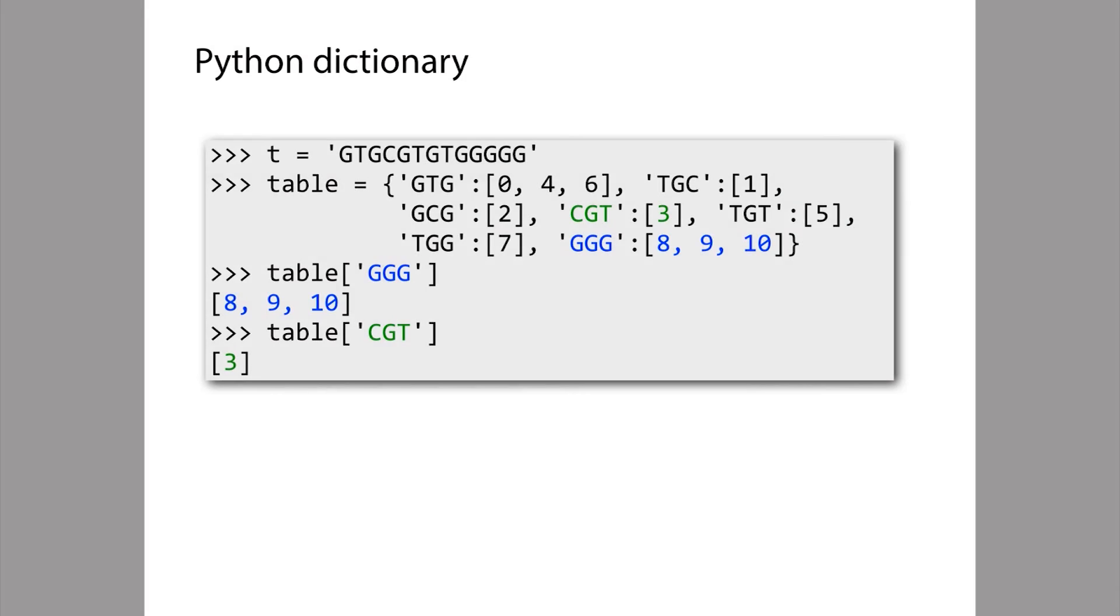So in Python, it's very easy to build and use a hash table because the Python dictionary type is an implementation of a hash table. So here I've initialized a Python dictionary in a way that corresponds to the situation from the previous slide, this dictionary here. And here are the 3mers, the keys in this dictionary. And then associated with each 3mer is a list of offsets where that 3mer occurs. So for example, triple G, the 3mer that we were querying with before, occurs at offsets 8, 9, and 10. And to query this dictionary, we simply use square bracket notation here. So for example, if we want to find all the offsets where the triple G query occurs, then we do this and we get back the list 8, 9, 10, just like from our previous example. If we want to know where the triple CGT occurs, we again can use square bracket notation and we get back a list that has one entry, which is the offset 3.